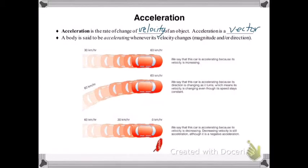A body is said to be accelerating whenever its velocity changes and because acceleration is a vector, this change can be a change in the size or magnitude of the velocity and or the direction of motion. The diagram gives three different cases.